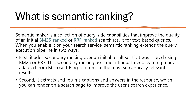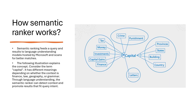Let's look at an example. Suppose we want to search based on the word 'capital'. Capital can be used in different meanings based on different contexts — it could be associated with provinces, state, building, or capital of a country. It could be associated with crime and punishment — capital punishment or capital crime. It can also relate to taxation: capital tax, capital investment, capital gains. A lot of things are related to that word.